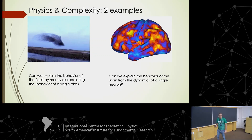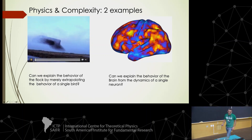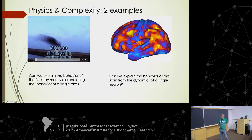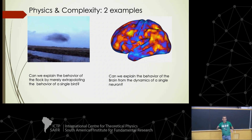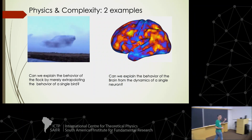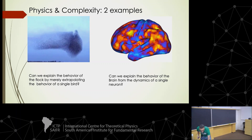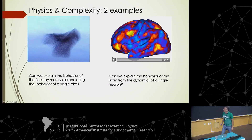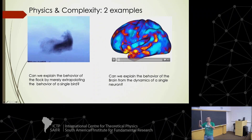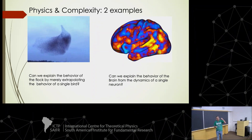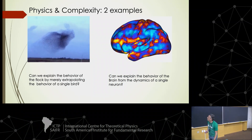Two examples of complex systems. One is the popular choice: a flock of starlings. Can we explain the behavior of the flock just by extrapolating the behavior of single birds? Or can we explain the behavior of a brain — this is a picture of fMRI, a movie with brain activity — how do we explain how different patterns appear just because we know how a single neuron behaves? Well, the answer is no. This is what we deal with in understanding and modeling complexity.